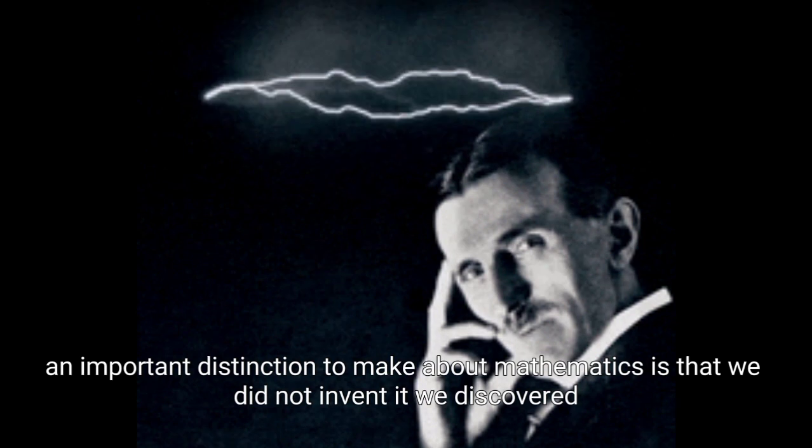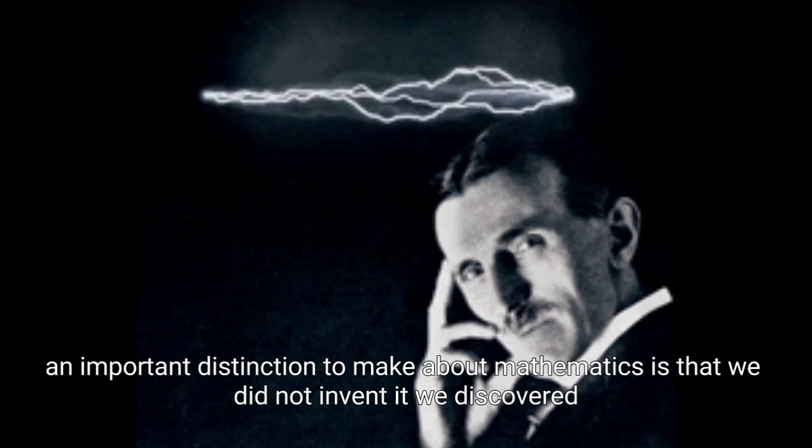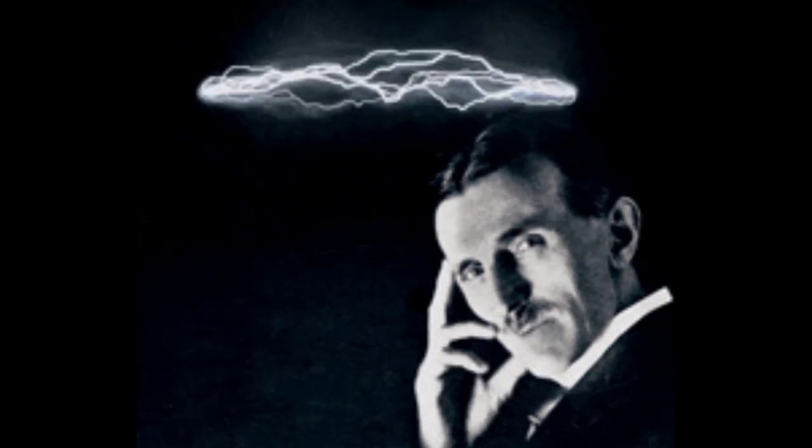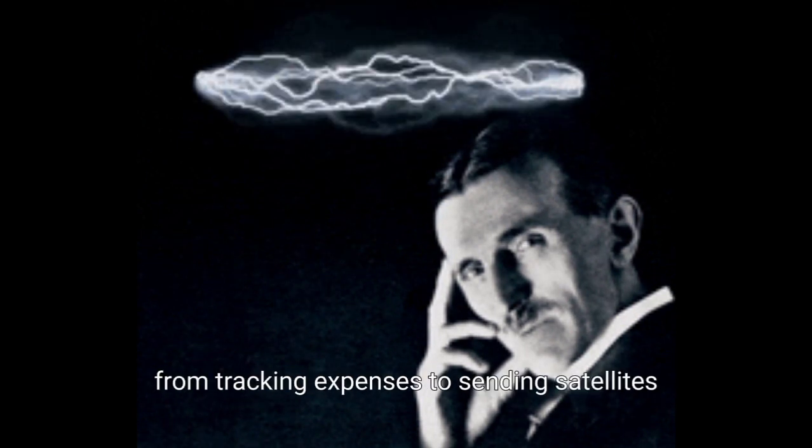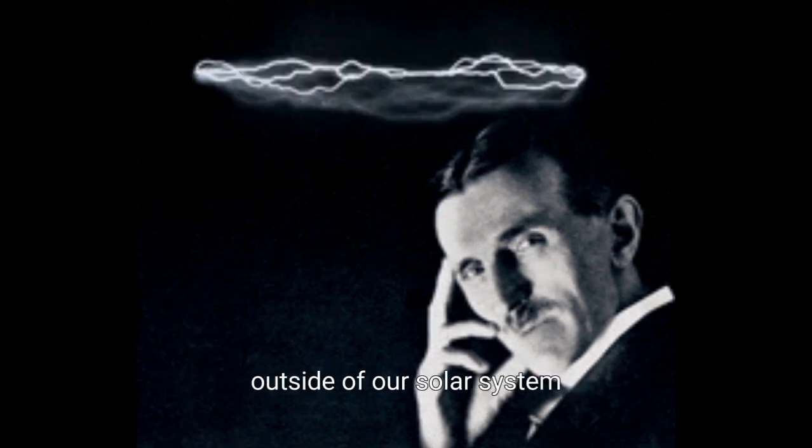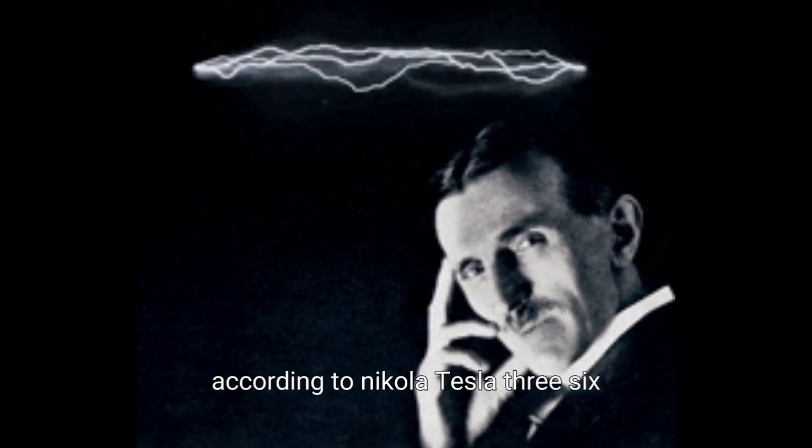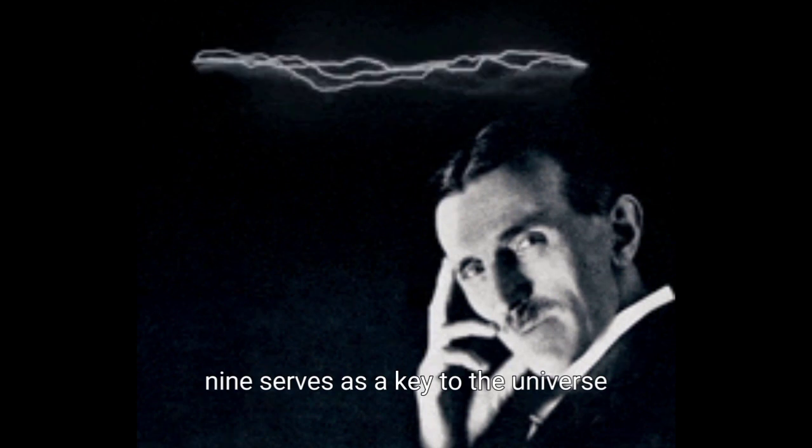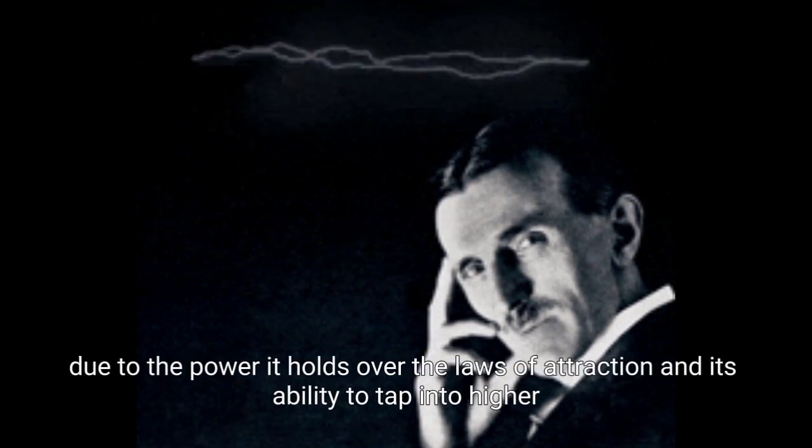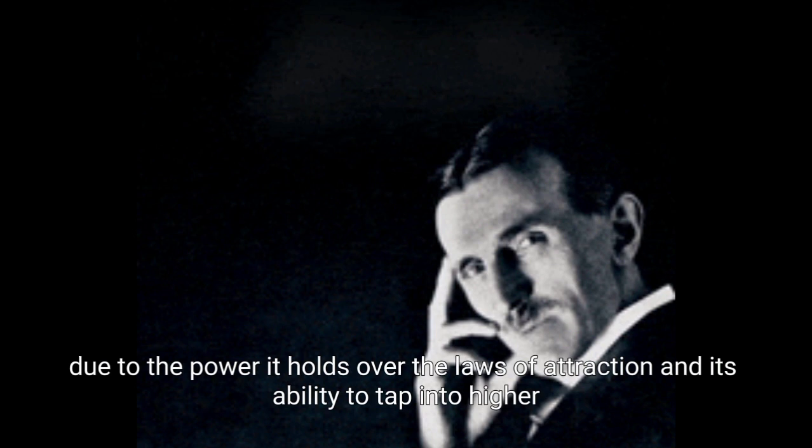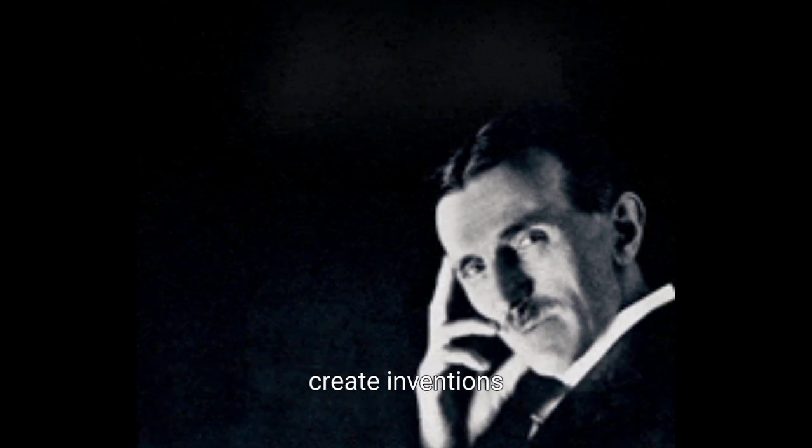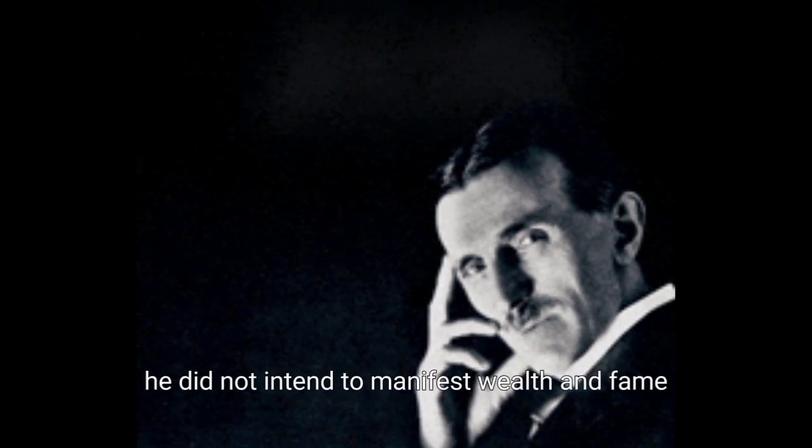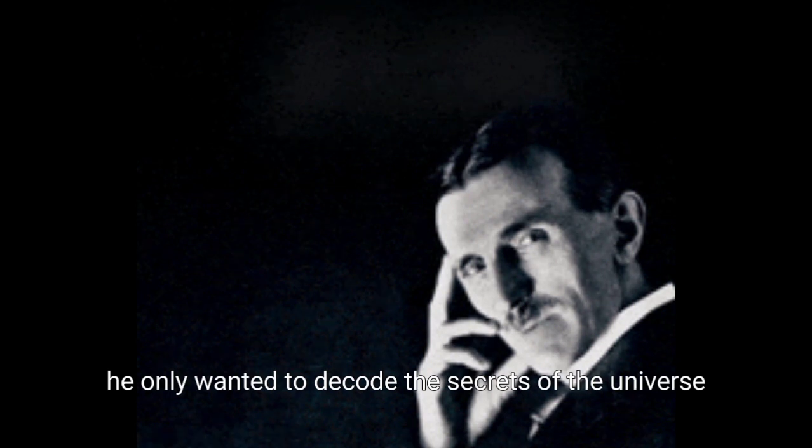An important distinction to make about mathematics is that we did not invent it, we discovered it. Throughout history, mathematicians and physicists have decoded this universal language to accomplish everything from tracking expenses to sending satellites outside of our solar system. According to Nikola Tesla, 3, 6, 9 serves as a key to the universe due to the power it holds over the laws of attraction and its ability to tap into higher realities. Doing everything in 3s enabled Tesla to enjoy unexpected longevity, make discoveries, and create inventions. He did not intend to manifest wealth and fame, he only wanted to decode the secrets of the universe.